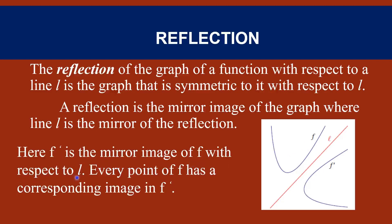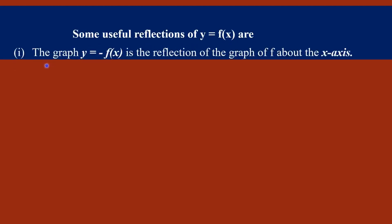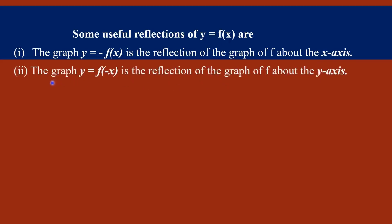So f-dash is the mirror image of f with respect to l. Every point of f has a corresponding image in f-dash with respect to this line l. Some useful reflections of y = f(x) are: first, y = -f(x) is the reflection of the graph of f about the x-axis. If x is replaced by -x, the curve is the reflection of the graph of f about the y-axis.